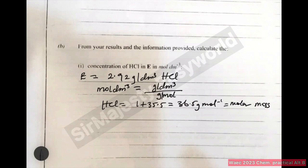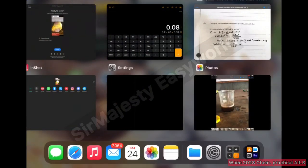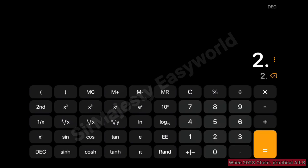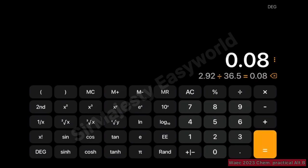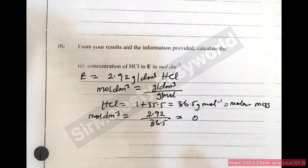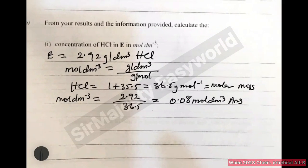Therefore, substituting our values: mole per dm³ is equal to 2.92 divided by 36.5. From the instruction paper, the answer should be 0.08 mole per dm³. 2.92 divided by 36.5 gives 0.08 — that's correct, and this is what they actually provided. So 0.08 mole per dm³ is our answer. Then we go to the next question.